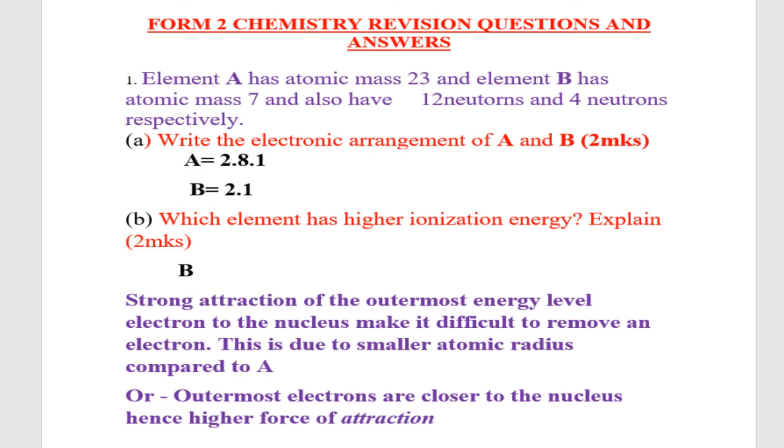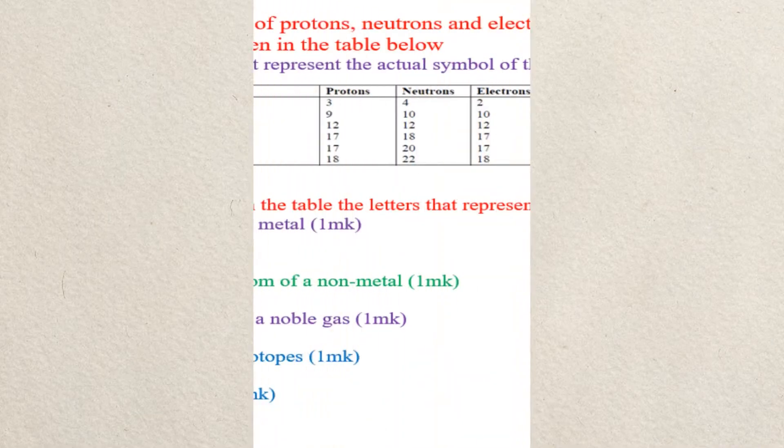The outermost electrons are closer to the nucleus, hence higher force of attraction, and therefore it requires higher ionization energy.